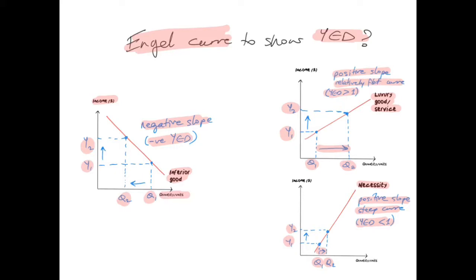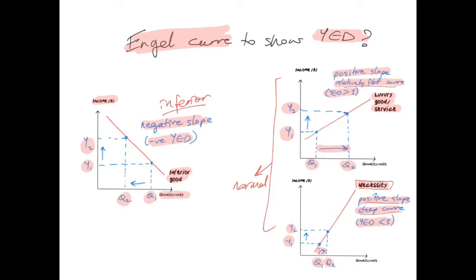So an Engel curve plots the relationship between income on the Y axis and quantity demanded on the X axis. We use it to see whether the good is an inferior good — if it's an inferior good, it will have a negative slope. If it's a normal good, it will have a positive slope. If this positive slope is relatively flat, this represents luxury goods or services where demand is very income elastic. If it's a necessity with income inelastic demand, it will have a positive slope but the curve will be relatively steep, and the value of YED will be less than one.